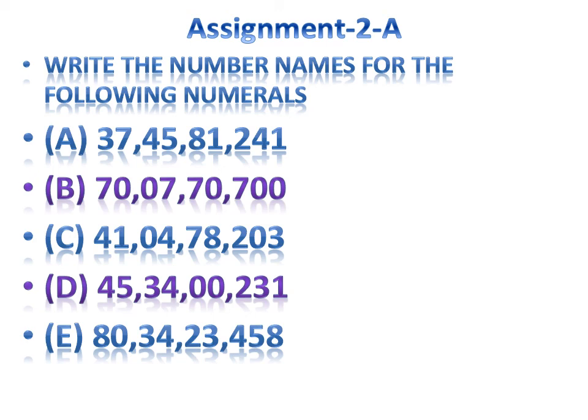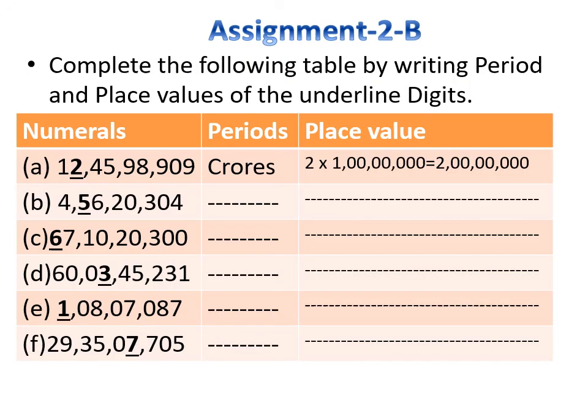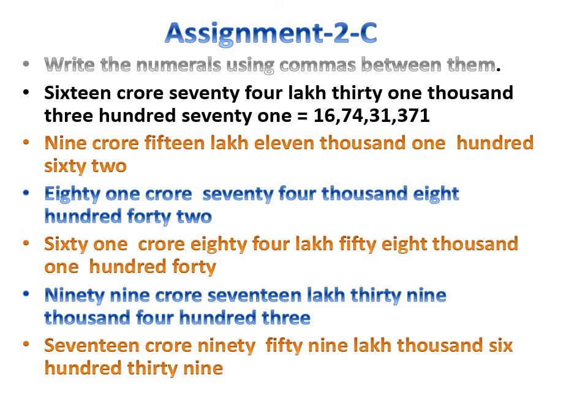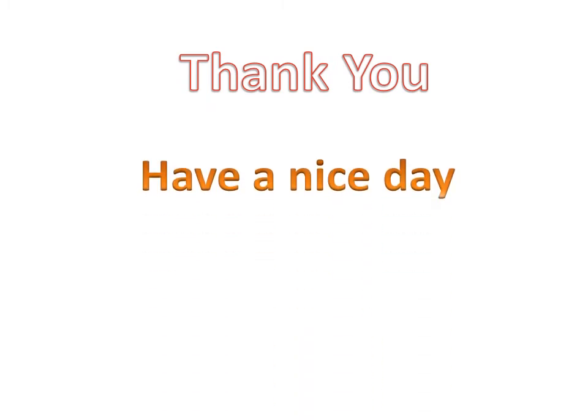There is an assignment for you, because mathematics needs practice and practice makes man perfect. Today we learned about the new places — one crore and ten crore. I hope you have clear ideas and better understanding of the topic. The assignment has three parts: Assignment A, Assignment B — where you write the periods and place values of the underlined digits — and Assignment C. Thank you, have a nice day dear students, bye!